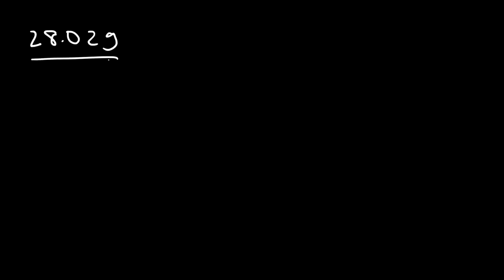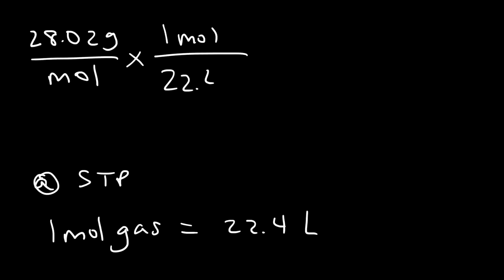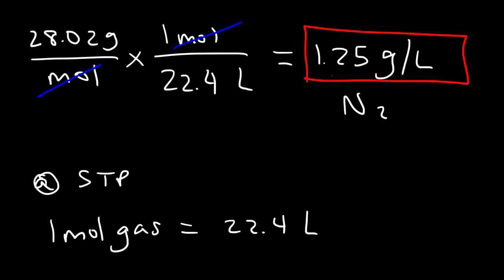Now it turns out that there's another way to get the same answer. You can start with the molar mass, 28.02 grams per mole. Now at STP, you need to know that 1 mole of gas occupies a volume of 22.4 liters — that's the molar volume. So we can write 1 mole over 22.4 liters, set it up so the unit moles cancel, and now we have the units for density, grams per liter. So it's just 28.02 divided by 22.4, giving an answer of 1.25 grams per liter. Both ways work — you just pick the method that suits you.